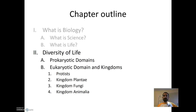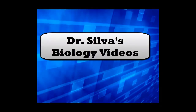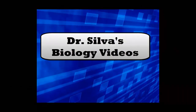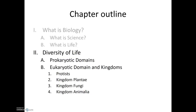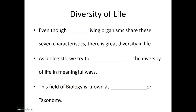Now that we've spent some time talking about the shared characteristics of all life, let's spend some time talking about what makes living organisms different from each other. So even though all living organisms share these same seven characteristics, there's great diversity in life. As biologists, we try to organize the diversity of life in meaningful ways.